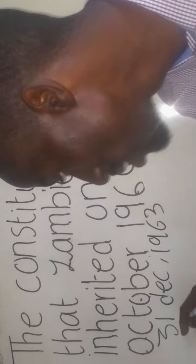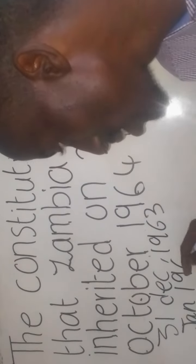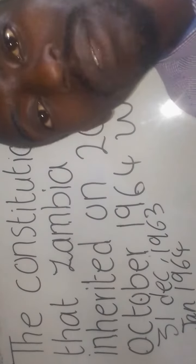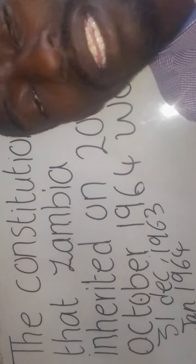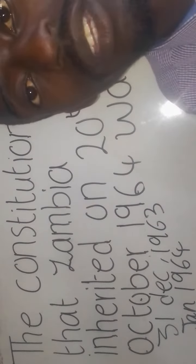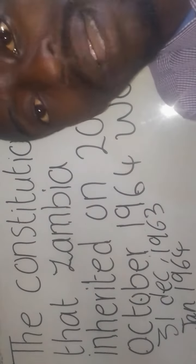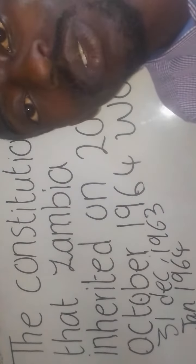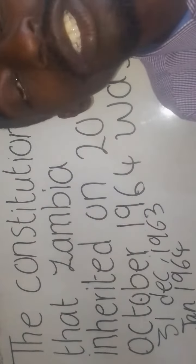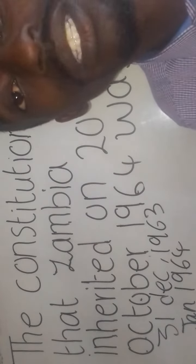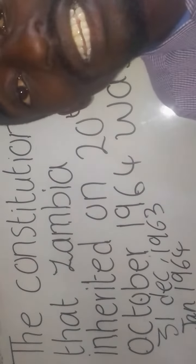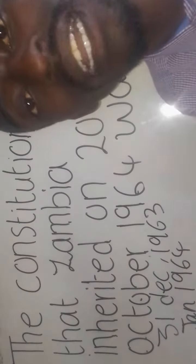By January 1964, Kenneth Kaunda was elected as Prime Minister of Northern Rhodesia. But due to the uprising of other political parties or leaders as well as the whites, it led to a conflict.